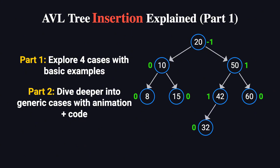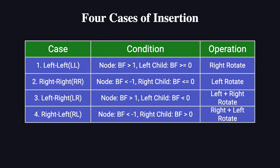When inserting into an AVL tree, we often run into four classic types of imbalances, each requiring a specific adjustment. To make things clearer, I've put together a table that summarizes the conditions for each type and the corresponding rotation operation. As we work through the examples, we'll refer to this table to identify the imbalance type and apply the appropriate adjustment.